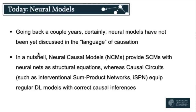So, what are we going to do today? Neural models. We talked about deep learning, neuroscience, neural nets, deep neural nets, and a little bit about causality. Going back a couple of years to 2021 — the papers I'm presenting today — at that time neural nets were not discussed in the language of causality, at least Pearl's causality. Today we are really just Pearl's causality, no other notion from past lectures, and it's going to be somehow with neural models and model-centric. In a nutshell, NCMs — neural causal models — they provide SCMs where the neural nets are simply the structural equations. And causal circuits, such as the interventional sample network, the ISPN, equip regular deep learning models with correct causal inferences.